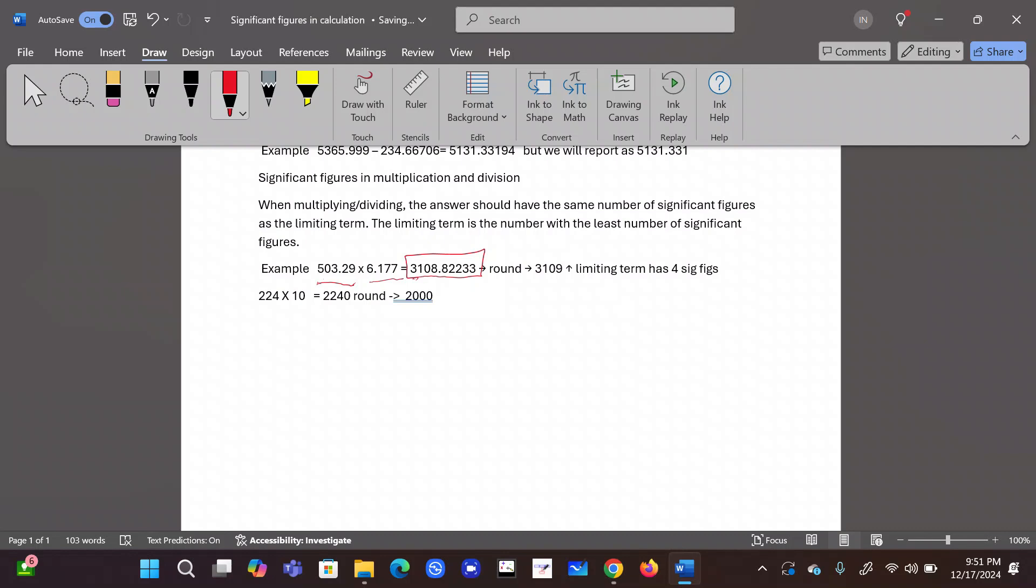But in science, physics, chemistry, or any other physical science, if you are solving a problem, you are calculating something, then it must be reported to the least significant figures. In this number, there are five significant figures. Here, there are four significant figures. Therefore, I have to round this answer to four significant figures, which I have done here, 3109. So that is the correct answer.